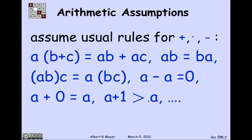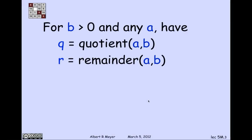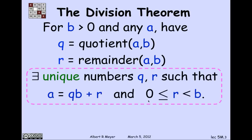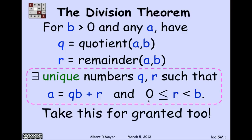One more fact we're going to take as an axiom. If I divide a number A by a positive number B, then when we're talking about integers, what I get is a quotient and a remainder. The division theorem says that if I divide A by B, that means the quotient times B plus the remainder equals A. There is a unique quotient and unique remainder of A divided by B, where the remainder is constrained to the interval greater than or equal to 0 and less than the divisor B. We're going to take this fact for granted.